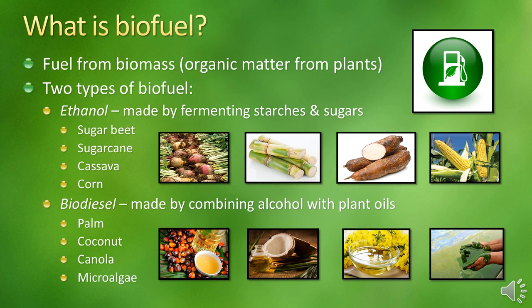Other crops also include sorghum, wheat, and potatoes — pretty much anything with cellulose can be used to make ethanol. The second type of biofuel is biodiesel, which comes from combining alcohol, usually methanol, with oils from plants and is used as a diesel substitute. The top three yields per acre are palm, coconut, and canola. Any oil that can be used as a vegetable cooking oil will work to make biodiesel, and this also includes recycled cooking oil.